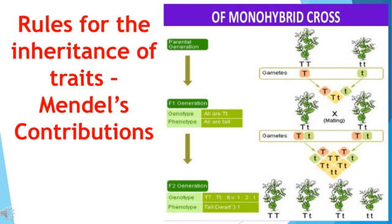This means that each trait can be influenced by both paternal and maternal DNA. Thus, for each trait, there will be two versions in each child. What will then the trait seen in the child be?